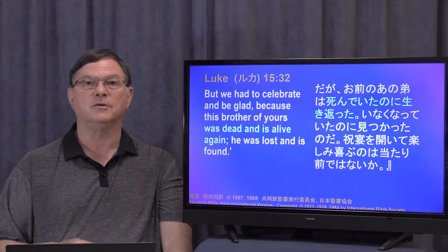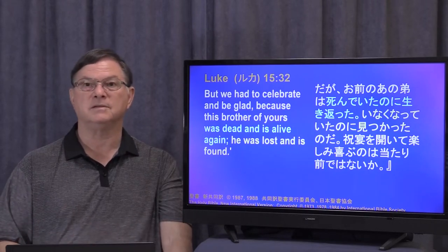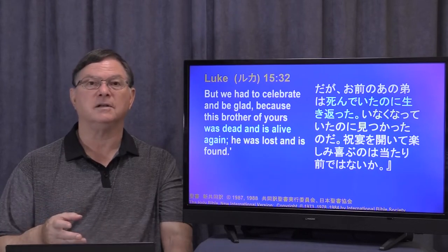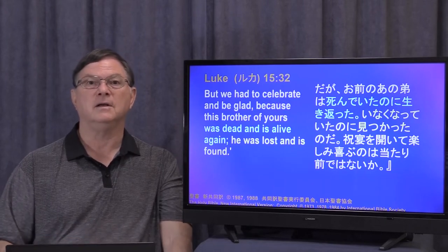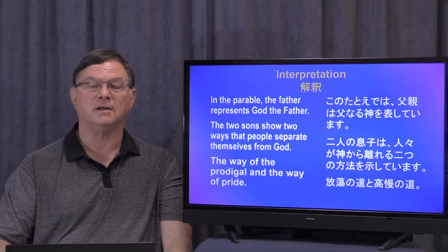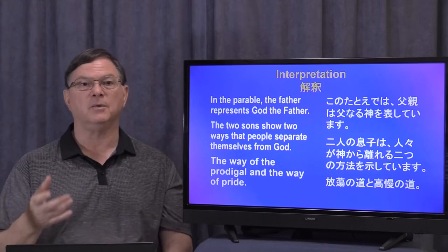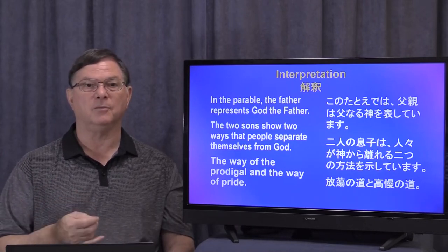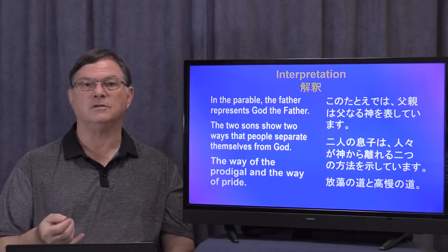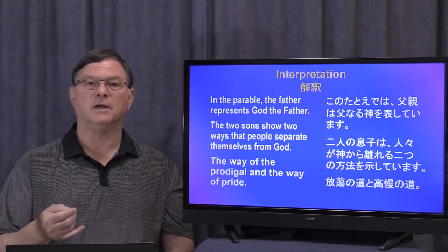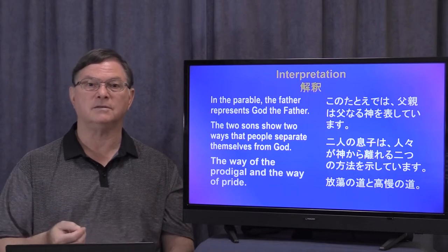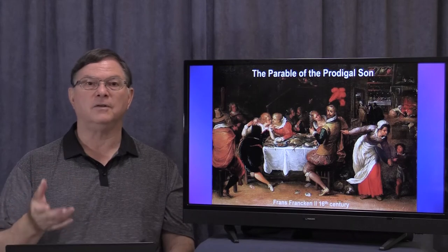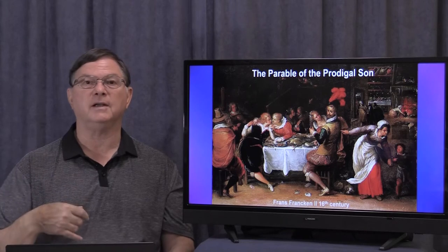Now, we could learn many things from this parable. But I've just picked up three or four things that I would like us to take a look at. First, the interpretation is simple: in the parable, the father represents God the Father. The two sons show two ways that people separate themselves from God — the way of the prodigal and the way of pride. The prodigal takes his money and just spends it on partying and completely wastes it.